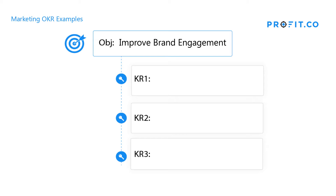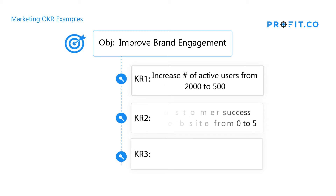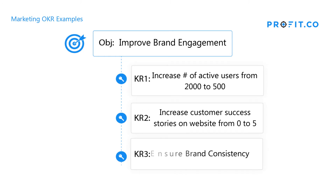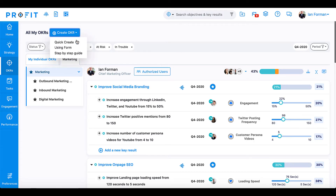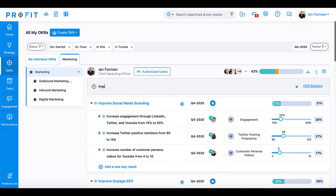The key results we could use for this objective are: Increase number of active users from 2,000 to 5,000; Increase customer success stories on website from 0 to 5; and ensure brand consistency. Let's input the first key result into the Profit.co software.